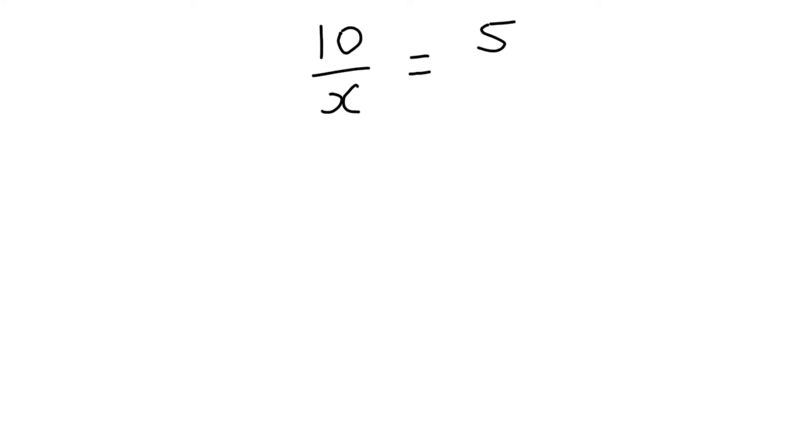So here we have an equation where we have the variable in the denominator of a fraction - it's on the bottom. But in order to solve, we actually need it in the numerator, in the top of the fraction, because we need x equals something, not 1 over x equals something. So the trick is how can we get this variable to be on the top, not the bottom.